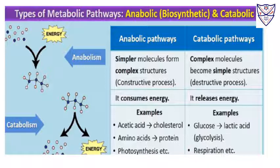Metabolic pathways can be of two types: anabolic or catabolic. Anabolic pathways are pathways which consume energy. Anabolic processes are generally constructive processes — we take simple molecules, join them together with the help of energy, and make complex structures. For example, we change acetic acid to cholesterol, or join amino acids to form proteins to make bigger molecules.